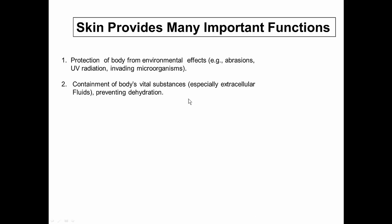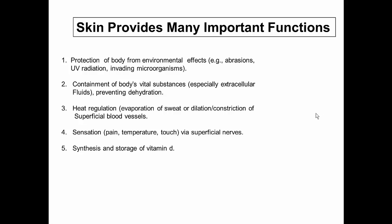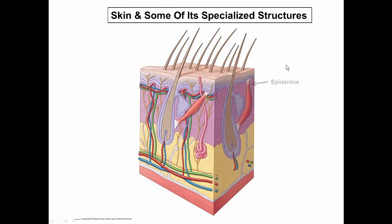Skin provides protection from environmental hazards, contains the body's vital substances, helps with heat regulation, allows us to feel the outside world, and is important for the synthesis and storage of vitamin D. The epidermis is the superficial cellular layer with a tough keratinized outer protective layer and a deep regenerative basal layer. Deep to the epidermis is the dermis, consisting of collagen and elastic fibers — collagen provides strength and toughness, while elastic fibers provide tone. As we age, elastic fibers deteriorate, leading to wrinkling. The dermis also contains hair follicles with erector pili muscles and sebaceous glands.